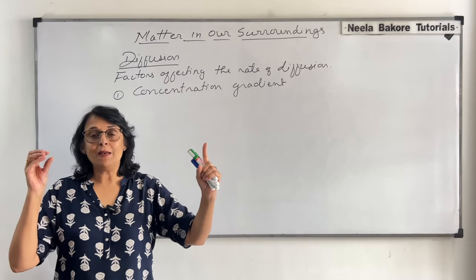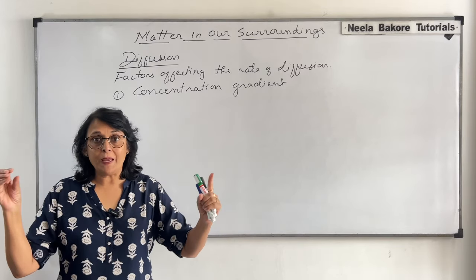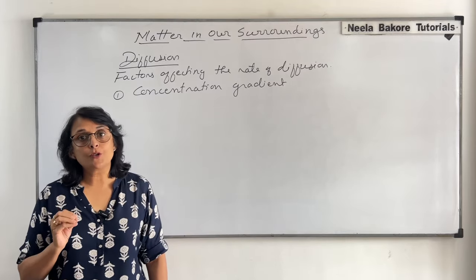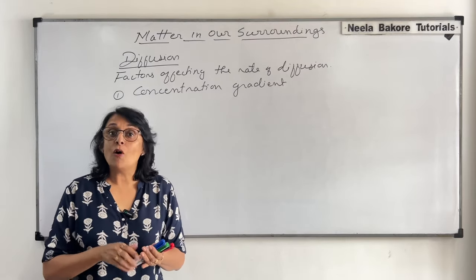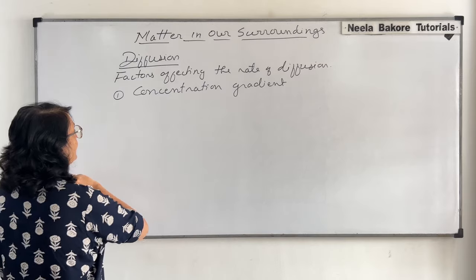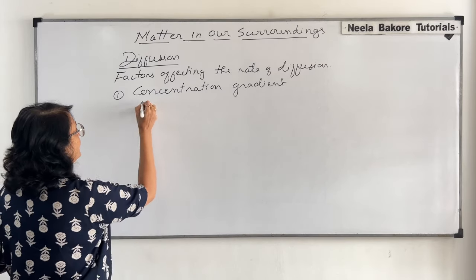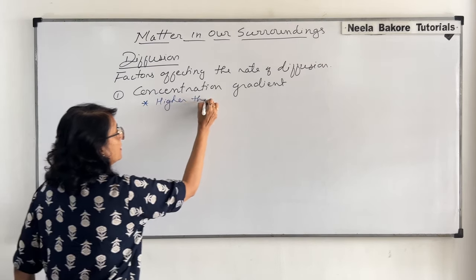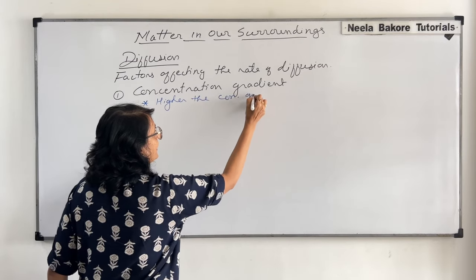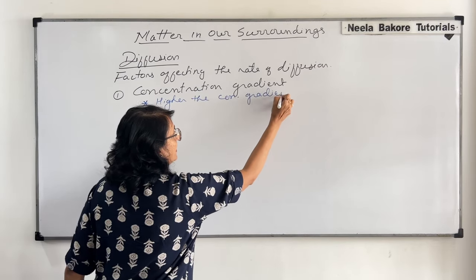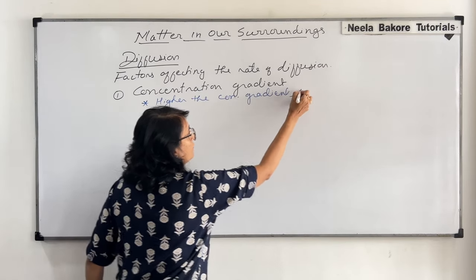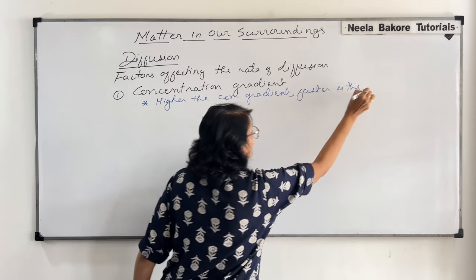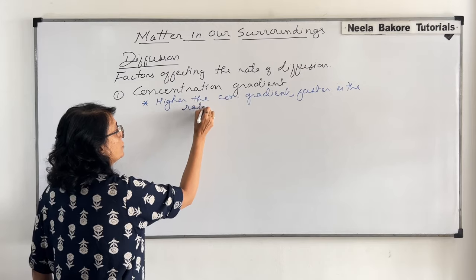Between point A and point B, if there is a huge difference, then the rate of diffusion is going to be higher or faster. So we write it as: higher the concentration gradient, faster is the rate of diffusion.